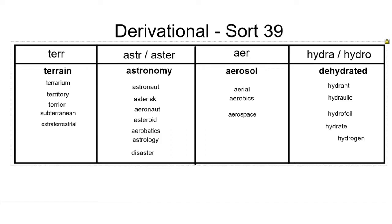Another word that you might not be familiar with is subterranean. Sub means underneath, while we know that ter means relating to the earth. So if something is subterranean, it is underneath the main layer of the earth.